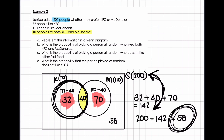The question asks: what is the probability of picking a person at random who liked both KFC and McDonald's? That's the intersection — 40 people like KFC and McDonald's. Probability equals favorable outcomes over total outcomes. So that's 40 over 200, and when I simplify that down, I get a probability of 1 over 5 that someone picked at random would like both KFC and McDonald's.